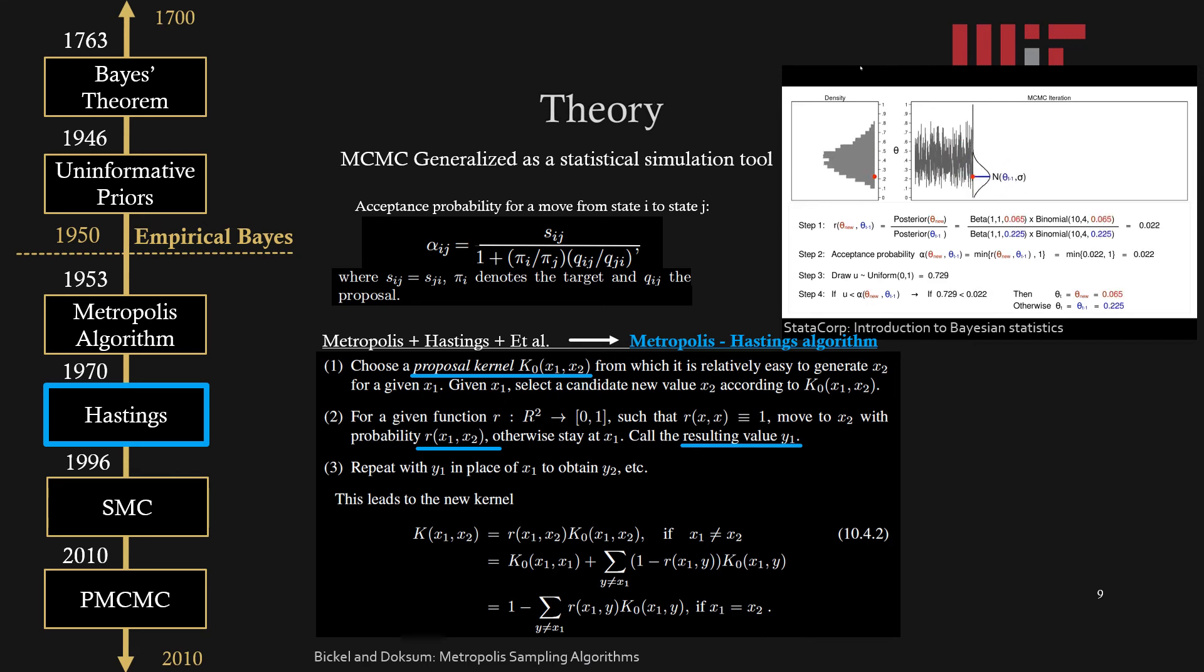Monte Carlo methods were generalized with Hastings in 1970. MCMC was determined to be a statistical simulation tool instead of something to apply to only specific problems. The acceptance probability was changed to this value of alpha ij, and the Metropolis-Hastings algorithm was born. The way this algorithm works generally is there is a proposed kernel which determines how one state transitions to the next, and it can also be called a transition kernel.